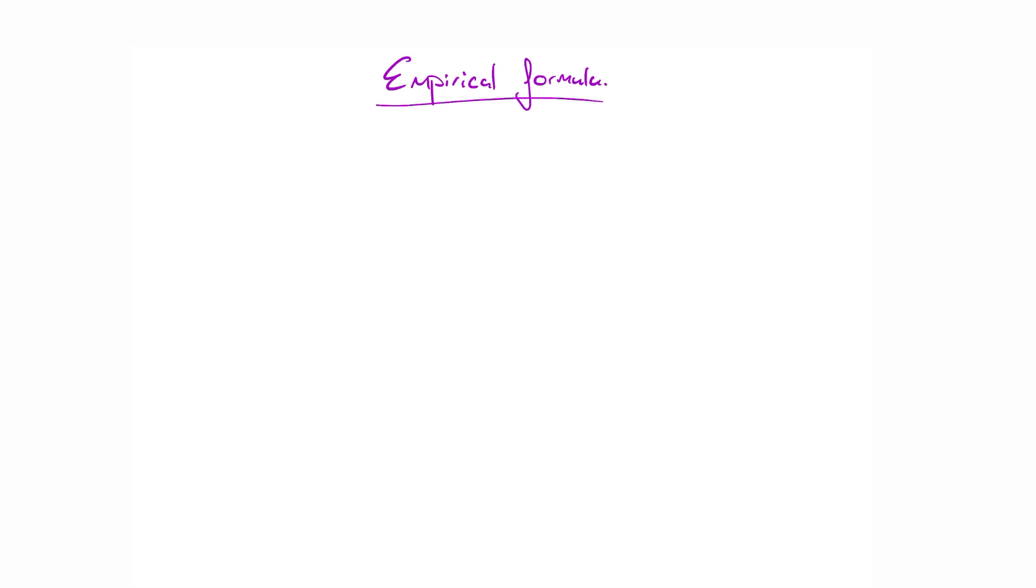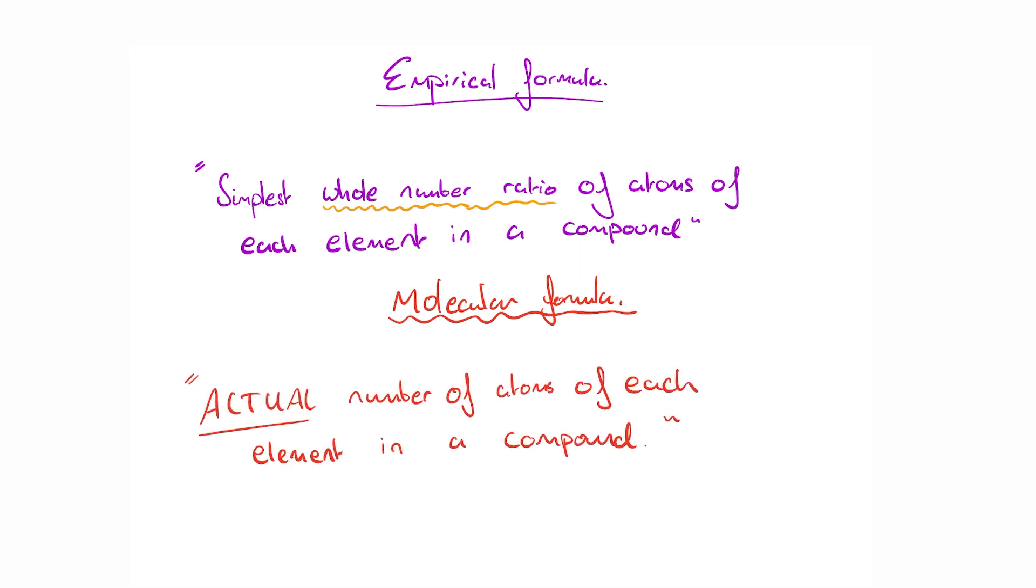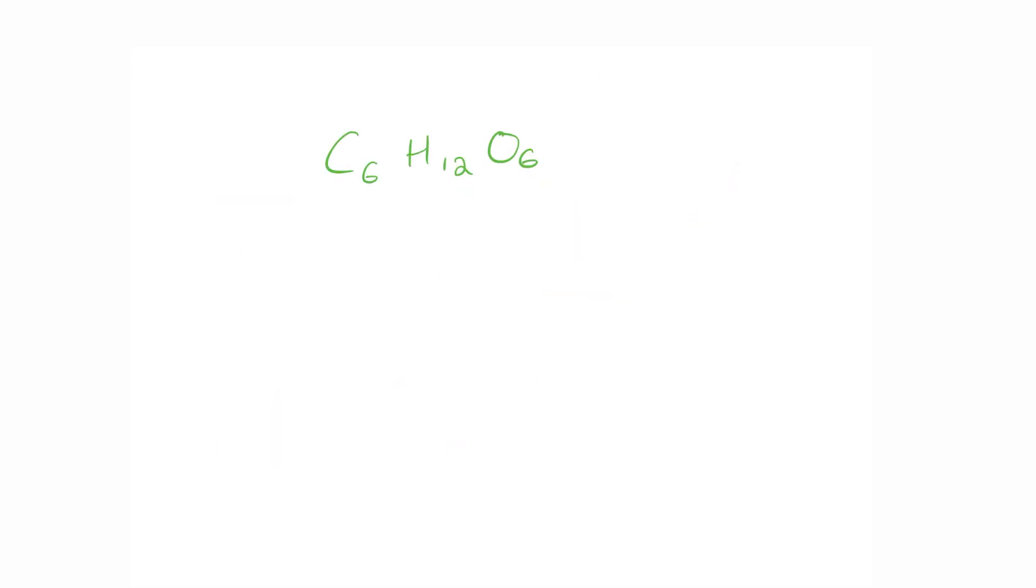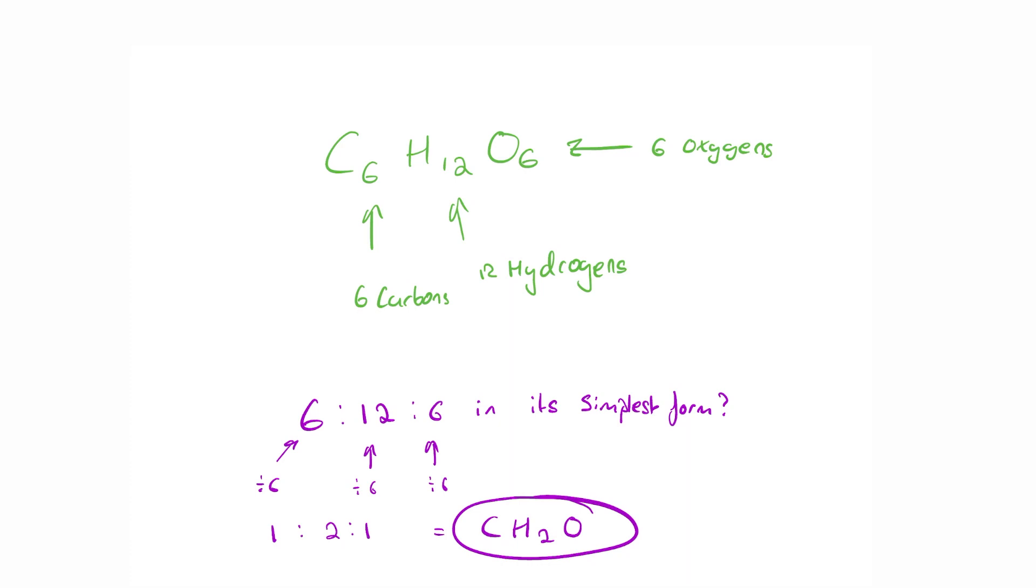Now it's time to deal with the empirical formula and compare it to the molecular formula. The empirical formula is defined as the simplest whole number ratio of atoms of each element in a compound, whereas the molecular formula is the actual number of atoms of each element in a compound. It's easier if we go with an example. Let's talk about a molecule of glucose. Its molecular formula is C6H12O6. That tells us the total number of atoms present in one molecule of glucose. We can clearly see there's six carbon atoms, 12 hydrogen atoms, and six oxygen atoms.